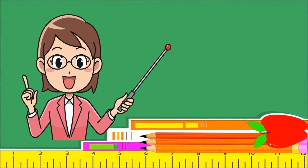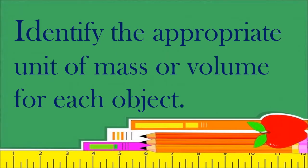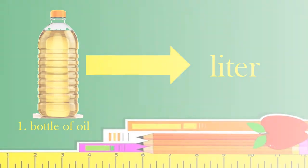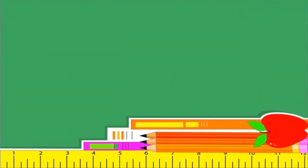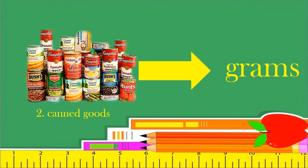Okay class, if you learned something today, let us check your understanding on mass and volume by answering our activity. Direction: identify the appropriate unit of mass or volume for each object. Number one, bottle of oil. If your answer is liter, very good, your answer is correct. Number two, canned goods. If your answer is grams, very good, your answer is correct.